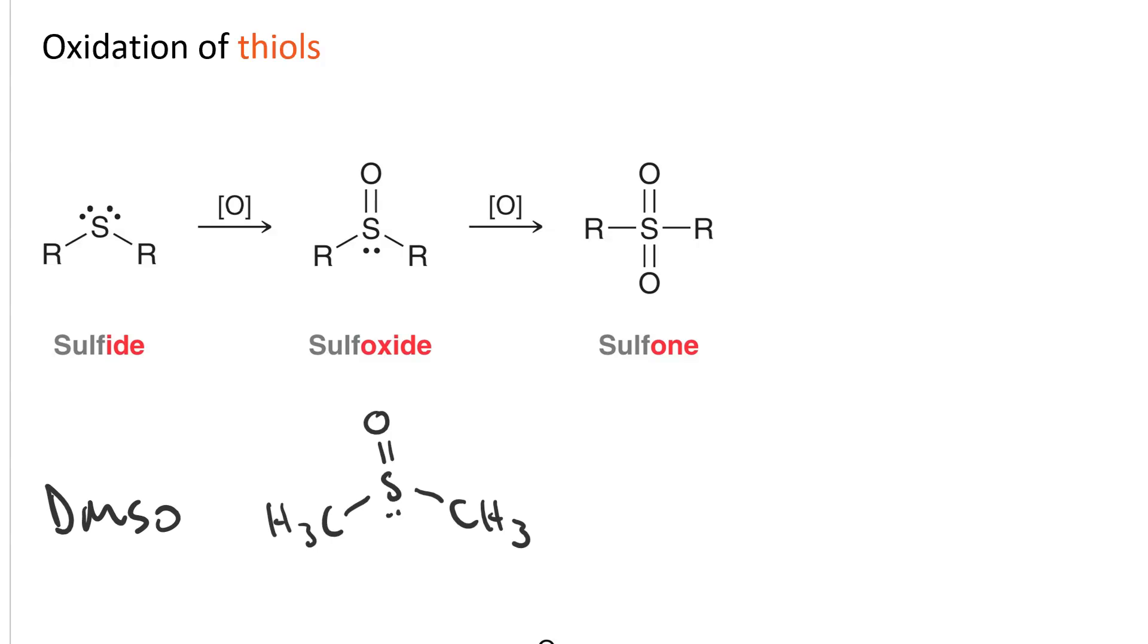If we oxidize our sulfoxide further, we get to a sulfone, which is the sulfur with two double bonded oxygens.